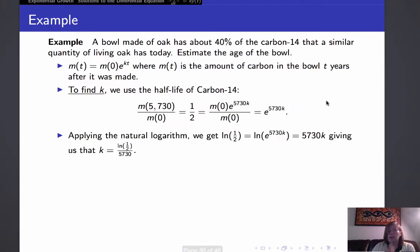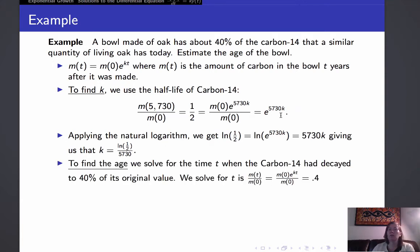So to find k, we have to solve this equation one-half equals e to the 5,730k. And of course we apply the natural logarithm to both sides to get to that k. So we have the natural log of one-half is 5,730k. And now solving for k, we get that it's equal to the natural log of one-half divided by 5,730. Now remember the natural log of one-half is a negative number, so k is negative, which agrees with the fact that we're talking about the decay of carbon-14 here.